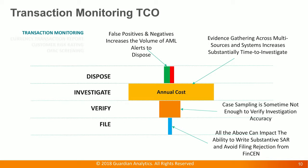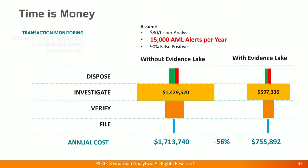Now let's take a look at some real examples. Time is money. Assuming you are paying an analyst $30 an hour and assuming a 90% false positive rate within the rules, 15,000 alerts per year is going to cost a bank around $1.7 million. With Evidence Lake, it is designed to reduce that cost by 56% to $750,000.